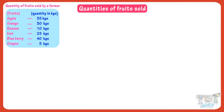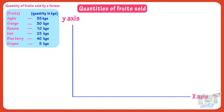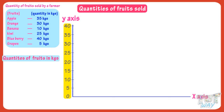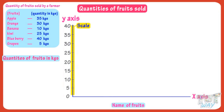A bar graph has two axes: x-axis and y-axis. We have two types of data — one is the numeric data showing quantities of fruits in kgs, and the other is textual data showing the names of fruits. The axis which shows numeric data is called the scale. On the y-axis we are showing the numeric data, and our numeric data is in the range of 1 to 40, so make a scale showing numbers 1 to 40. On the x-axis we will show the names of fruits and relate them to their quantities.